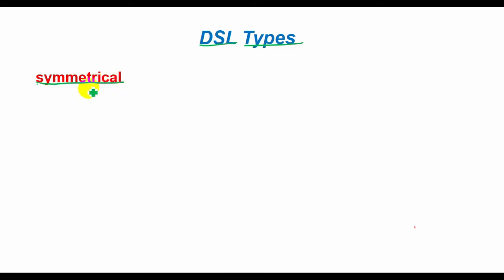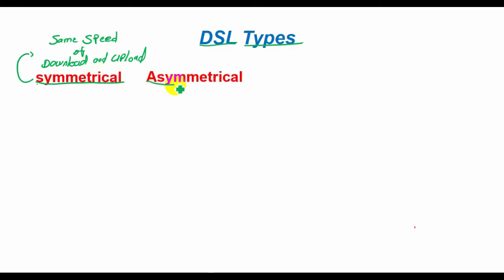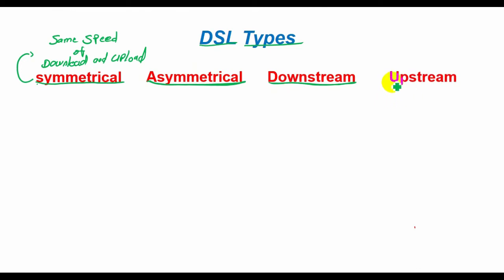Before we give a list of the various types of DSL, let us define a few terms. Symmetrical means a service in which data travel at the same speed in both directions — downloads and uploads have the same bandwidth. Asymmetrical means a service that transmits at different rates in different directions — downloads move faster than uploads. Downstream means traffic from the network to the customer. Upstream means traffic from the customer to the network operating center.